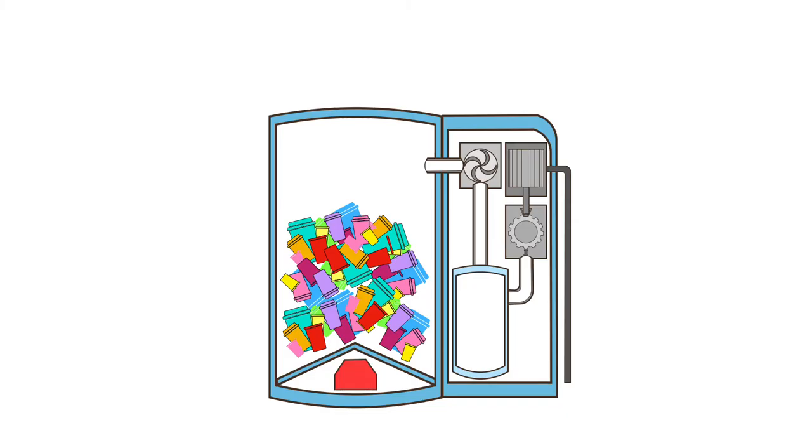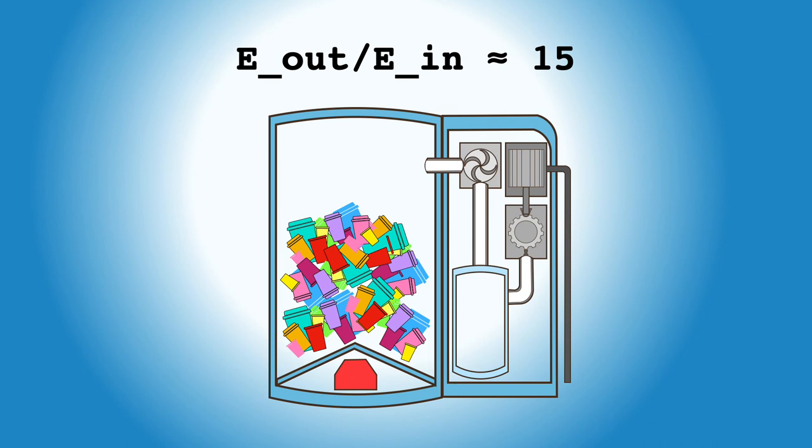So, the output energy is about 17 times the input energy. Thus, it's possible for a SWIG unit to generate 15 times more energy than what we use to run it. Even if the ratio is less, it's likely that processing a quantity of plastic waste in a SWIG unit will generate more energy than running the unit.